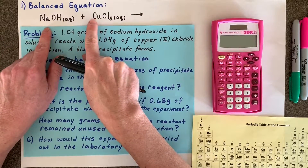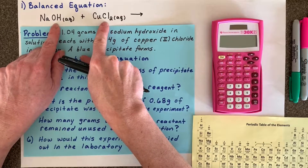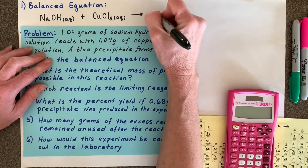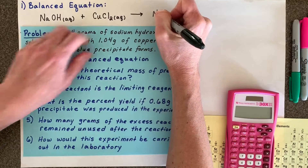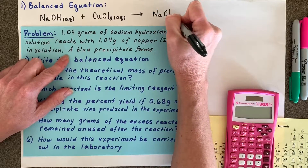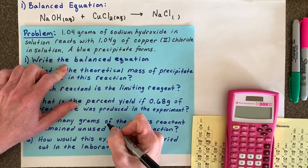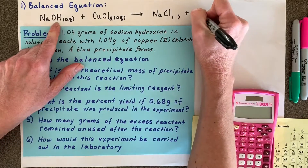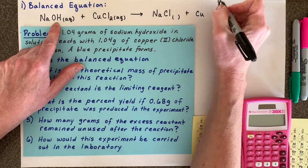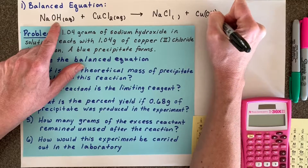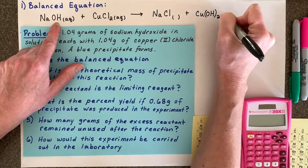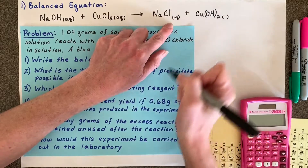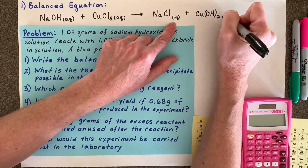This is a double replacement reaction where you have two metal cations and two anions that are going to try to switch partners and bond to create two separate products. The first product is sodium attempting to bond with the chloride ion — one plus and one minus. Next, you need copper to try to bond with the hydroxide. Hydroxide is a one minus, so you're going to need two hydroxides to bond with the copper two plus. Using solubility rules: sodium chloride is soluble in water, and copper two hydroxide is not.